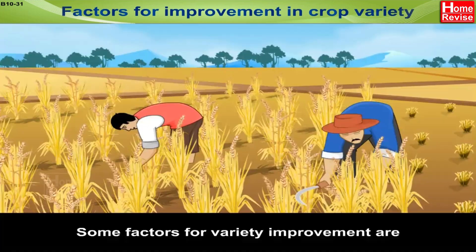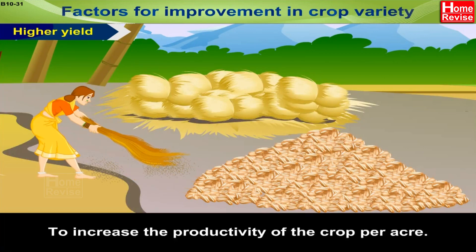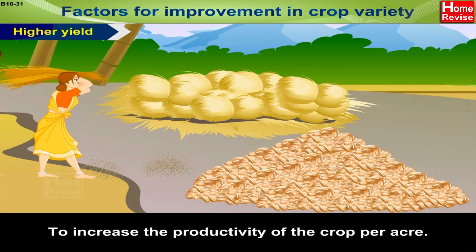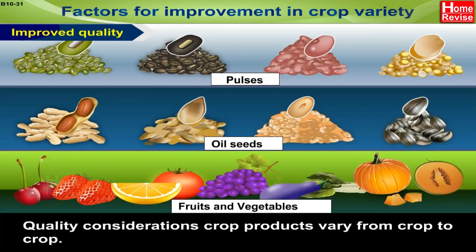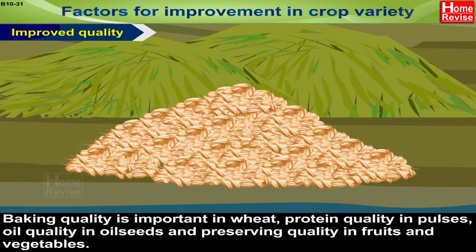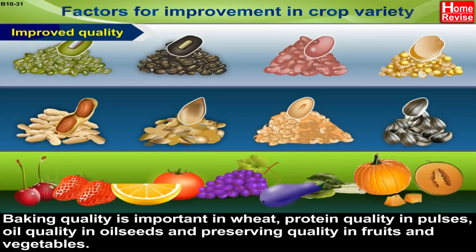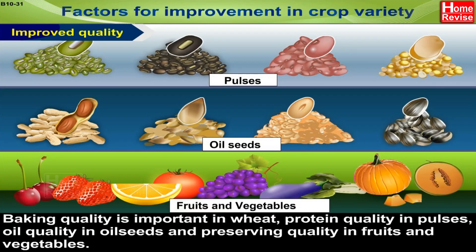Factors for improvement in crop variety: higher yield — to increase the productivity of the crop per acre. Improved quality: quality considerations vary from crop to crop — baking quality is important in wheat, protein quality in pulses, oil quality in oil seeds, and preserving quality in fruits and vegetables. Different considerations have to be kept in mind for different crops.